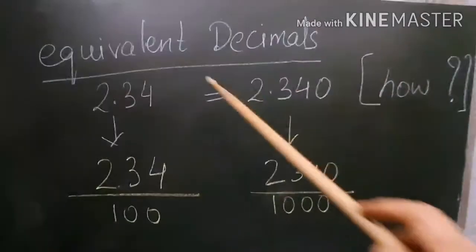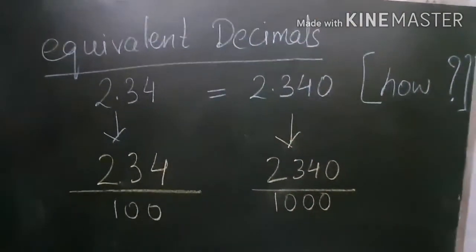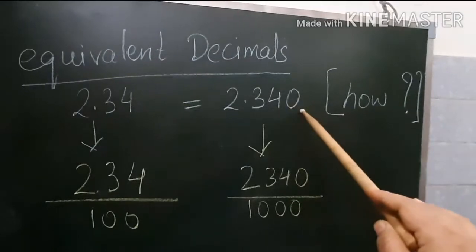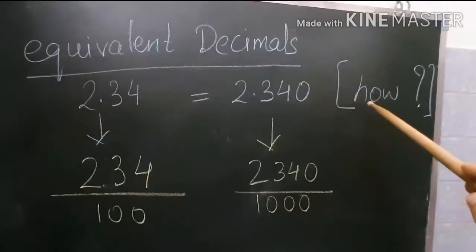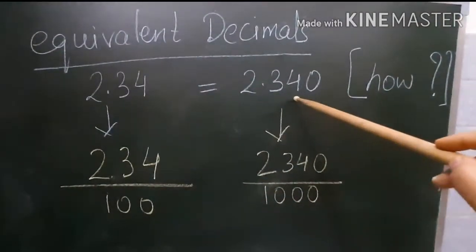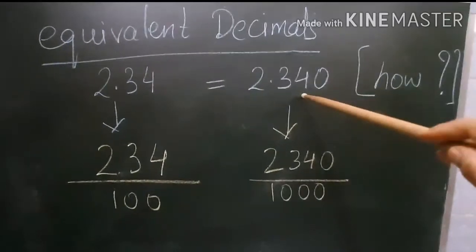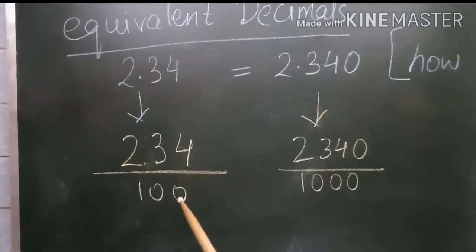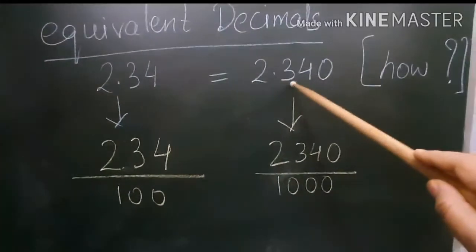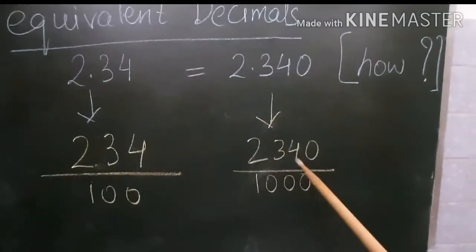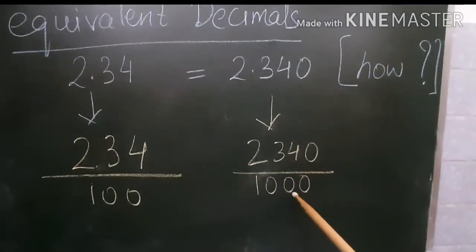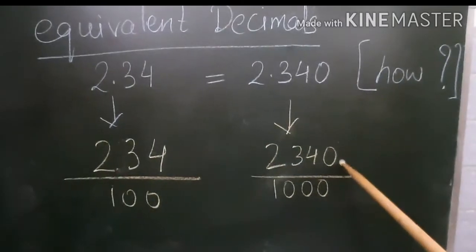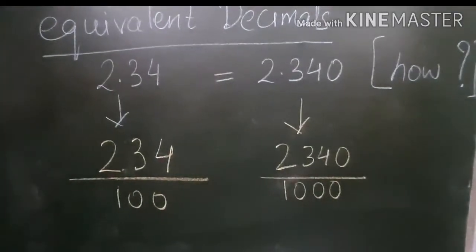Now let us understand equivalent decimals. Someone says 2.34 is equivalent to 2.340 — how can that be? In fraction form, 2.34 is 234 upon 100, and 2.340 is 2340 upon 1000. One goes up to 1000 and the other only to 100, so let us check how they are equivalent.